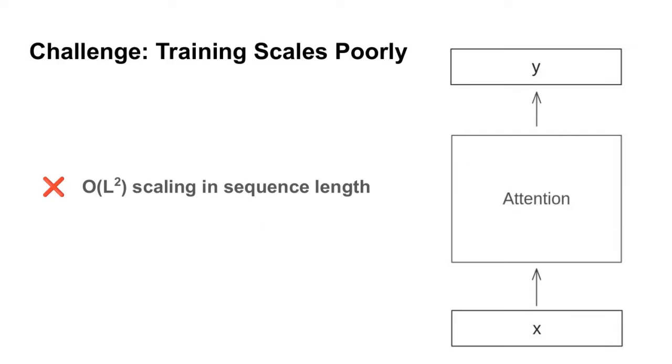The second challenge is that training scales poorly. In particular, it requires compute O of L squared in the sequence length. As sequences get extremely long, this requires computing a large attention matrix in order to compute our output y. Now again, there are very optimized ways to get around some of the challenges of this large attention matrix, but we still really inherently need to compute it.